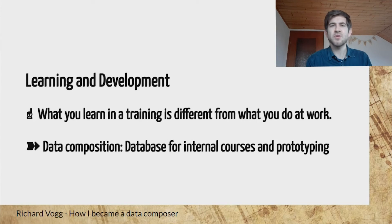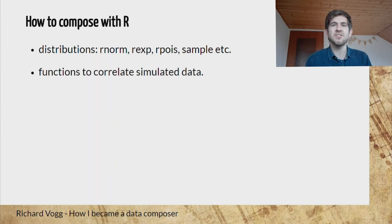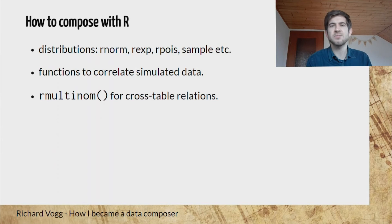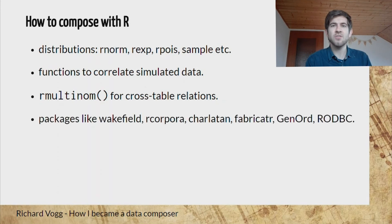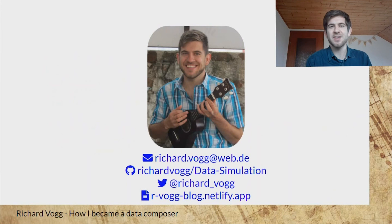All this was about why data composition is important. Now, how to compose with R: there are the distributions I already showed in the beginning, and there are also a lot of functions that can help you to correlate your simulated data, to create those connections between variables. There are functions that help you to create distributed relations between tables, and of course there are a lot of packages out there that can support you on your data composition process. I wrote a blog post for each one of those four points — I invite you to visit my blog where there are a lot more details, and I hope they might be helpful for you to become a data composer too. Thank you very much for your attention.